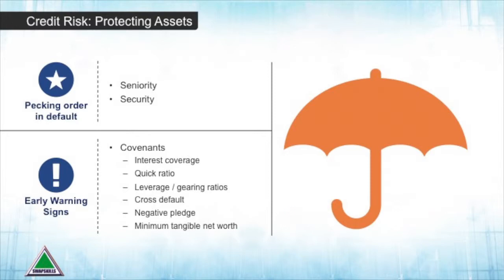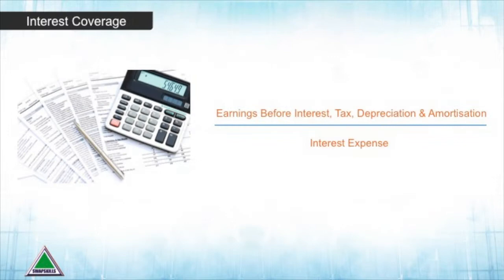A typical financial covenant would be the interest rate coverage ratio. This is where you look at the company's earnings before you've taken out interest costs, tax, depreciation, and amortization, and compare it to the amount of actual interest expense they have to pay. You want to know the company can afford to pay this several times over, especially if rates rise. So if the borrower has ten dollars of interest expense, you might feel comfortable knowing that they have at least forty dollars of earnings to cover it.